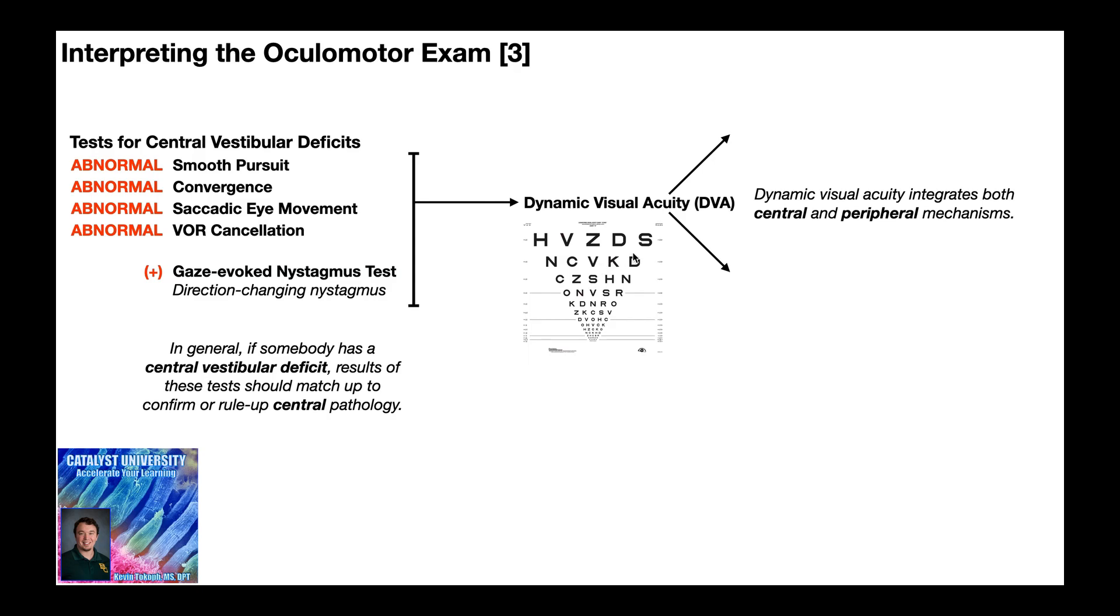And recall that dynamic visual acuity integrates both central and peripheral mechanisms, and so depending on the result of this test, it will indicate if somebody has impaired gaze stabilization.